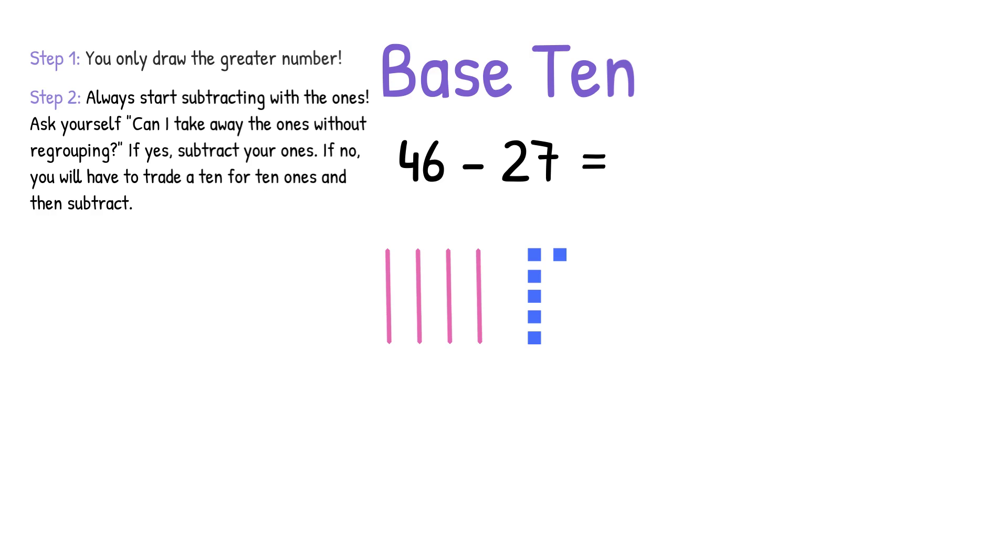In this equation we have six 1s. If you look at the number 27, we have to subtract seven 1s. We cannot do that, so we're going to have to regroup. One 10 for 10 1s.